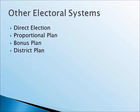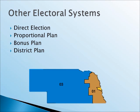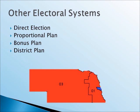One more alternative would be the district plan. This plan is actually already in use in Maine and Nebraska. In this plan, the winner of each congressional district — of which Nebraska has three — wins the electoral vote from that district. Then, the two votes from the Senate are awarded to the winner of the state's popular election. This plan has the same problem as some of the others: it's kind of confusing. And while it may work on a state-to-state basis, it's unlikely to be used by the entire country.